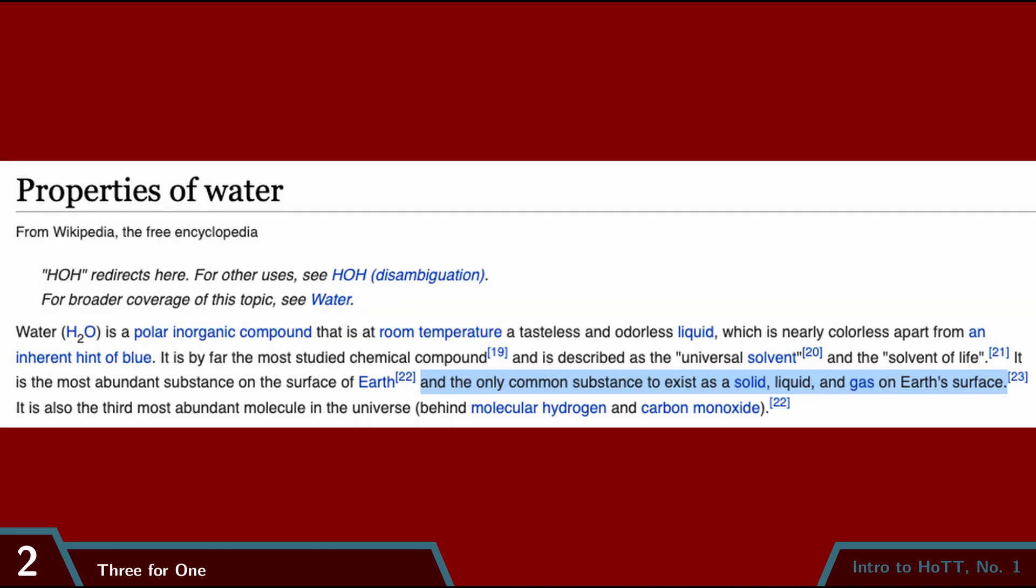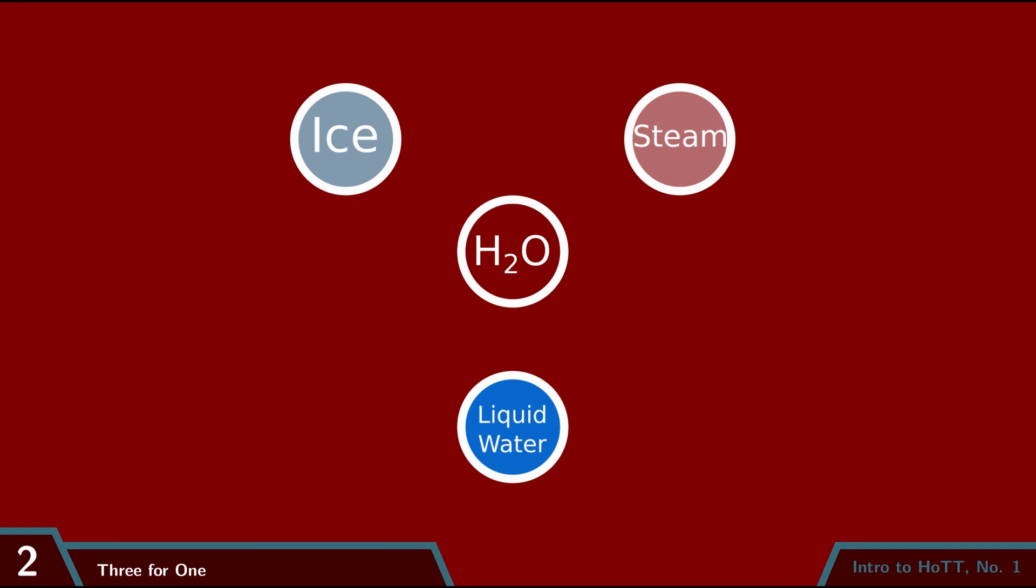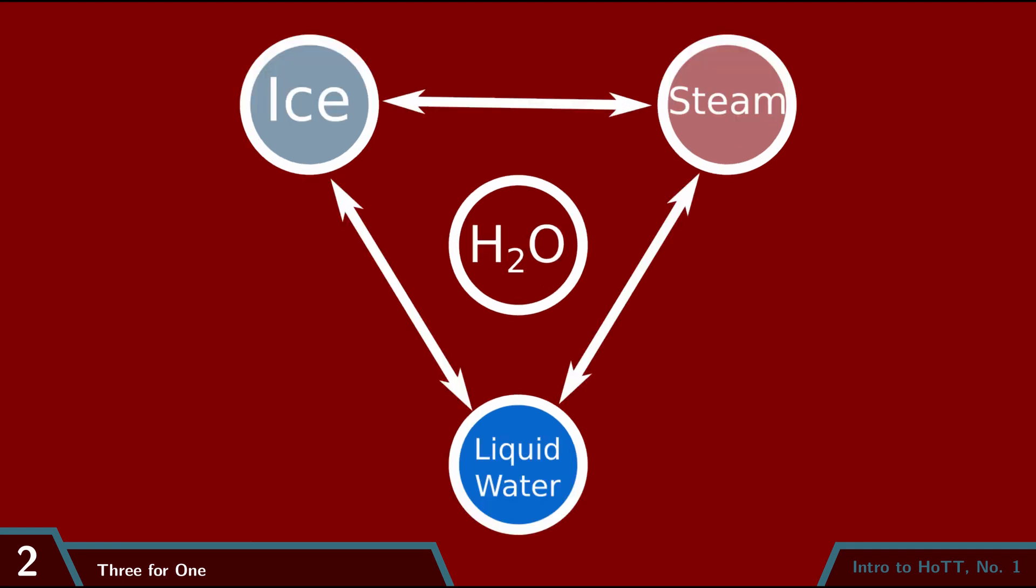Now if I remember anything from high school biology, it's that life as we know it is only possible because water is a very special substance with all kinds of useful properties. This is one of those properties, that water naturally exists in solid, liquid, and gas form. And in particular, it's endlessly useful that we can convert water between these different states with relative ease.